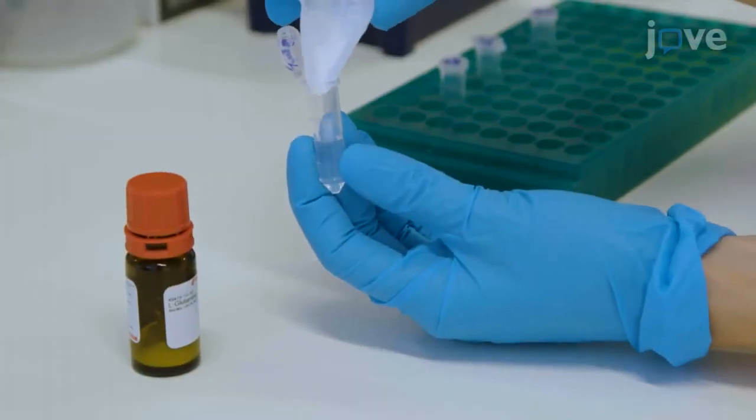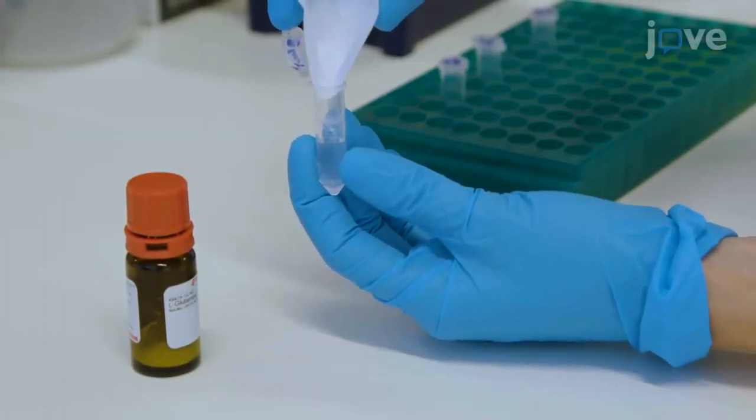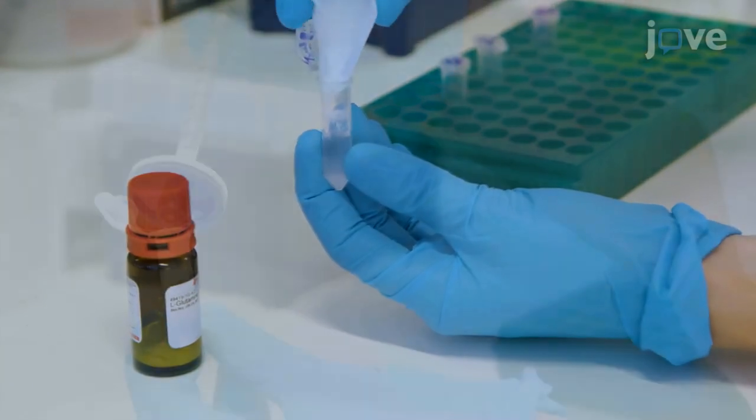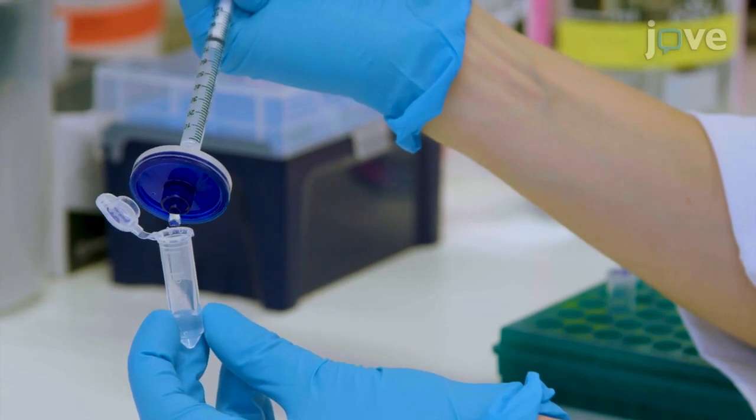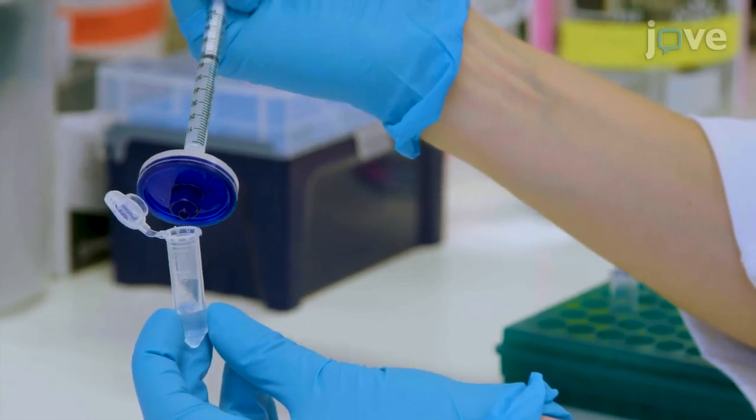Next, prepare a 10 millimolar solution of chemoattractant in 1 milliliter of the sterile medium and filter the chemoattractant solution with a 0.2 micrometer syringe filter to remove any particles and potential contaminants.